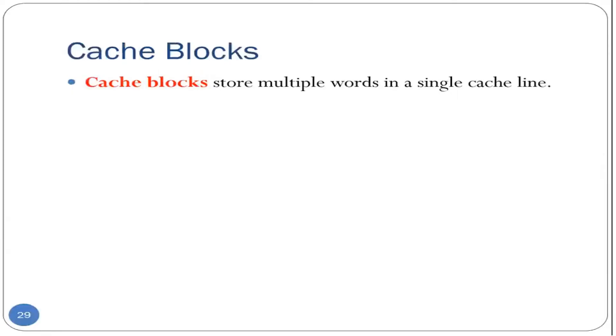Now, the question is, how do we exploit the principle of spatial locality in our caches? And that is done mainly with the help of cache blocks.